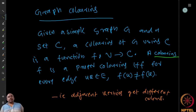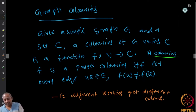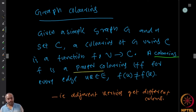Given a simple graph G and a set C, a coloring of G using the set C is a function from the vertex set V to C. That is all a coloring is. Most of the time we will use what is called a proper coloring.